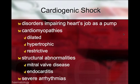Cardiogenic shock is a disorder impairing the heart's job as a pump. The most common conditions we see include heart muscle disorders like dilated cardiomyopathy, hypertrophic cardiomyopathy, or restrictive cardiomyopathy. There can also be structural abnormalities like severe mitral valve disease or endocarditis. Electrical conduction problems like severe arrhythmias can also impair the heart's ability to act as a pump.